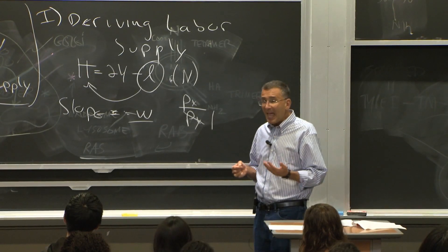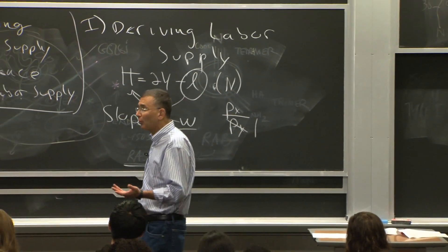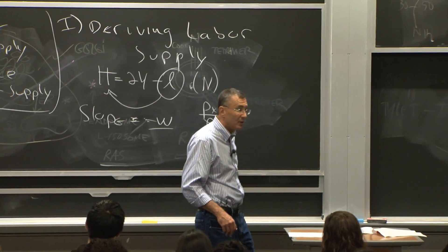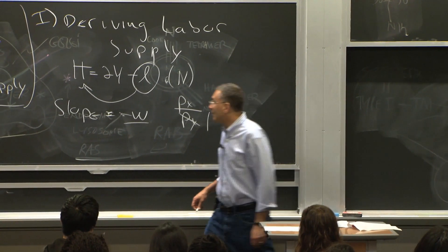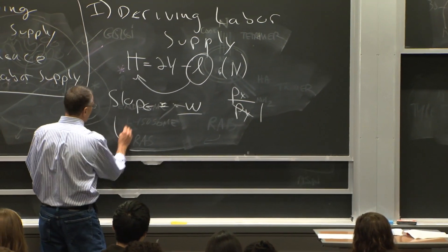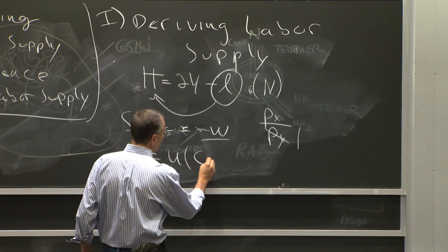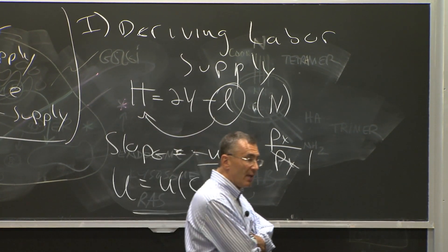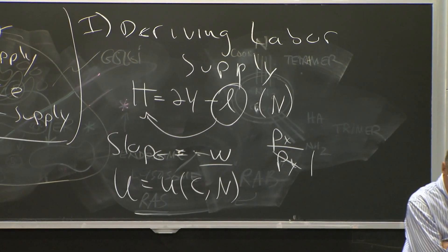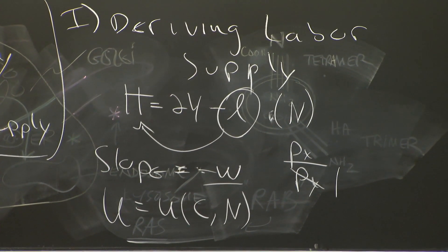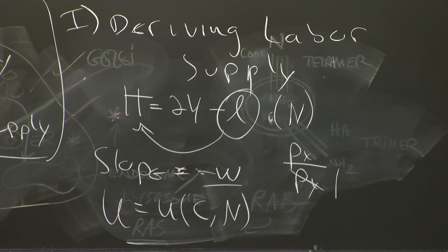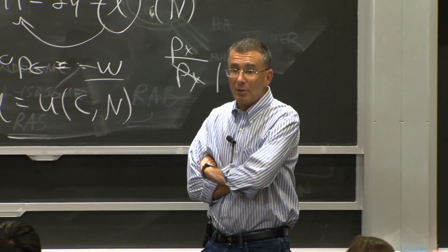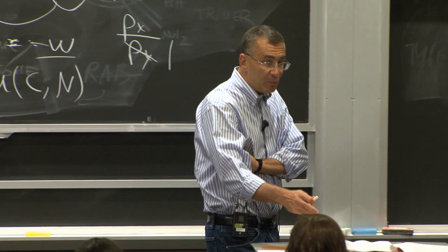Now, once we've defined that, we can use the same tools we already learned the last couple lectures. We can just optimize. We have some indifference curve where people have utility defined over consumption and leisure. They have utility U of consumption and leisure. Let's call it N like Perloff does. They just maximize that with respect to this budget constraint.